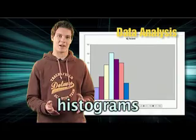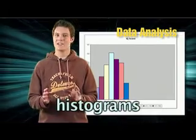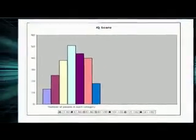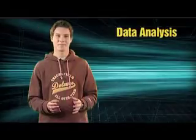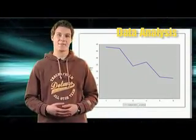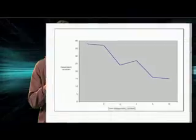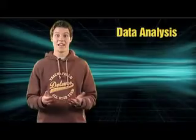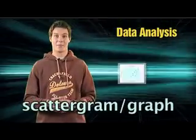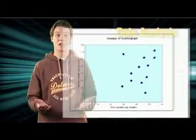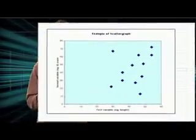You could use histograms. These look like bar graphs without the gaps and are for continuous data, so their numbers are on the x-axis. Line graphs can also be used for continuous data and are often preferred for comparing two sets of data. A scattergram or scattergraph is used to see if there's any correlation between two variables.